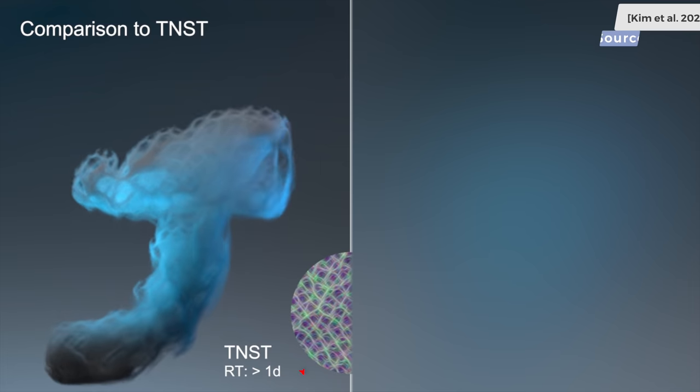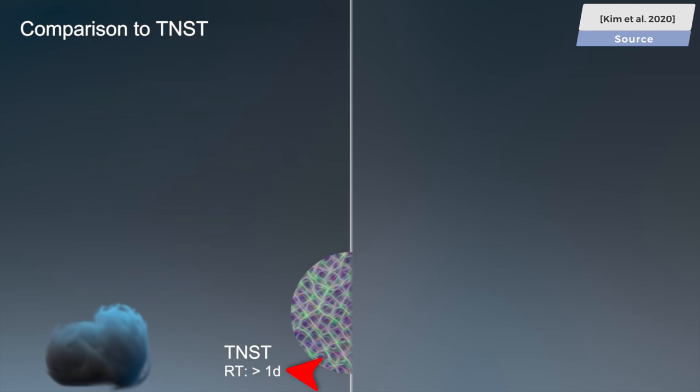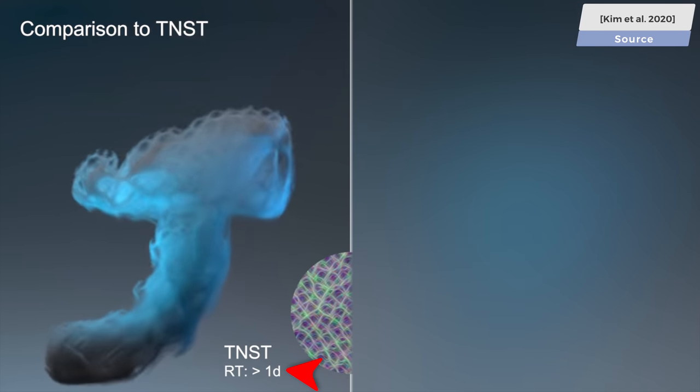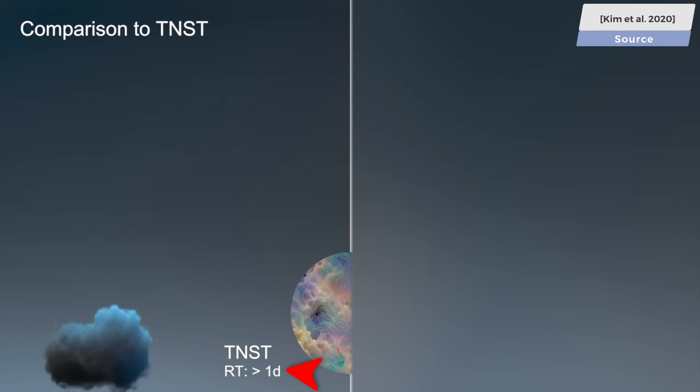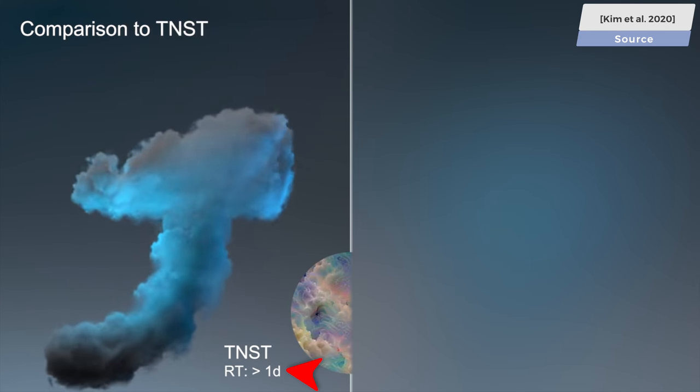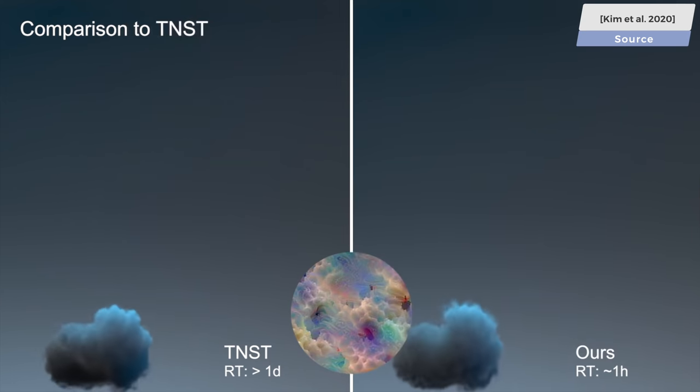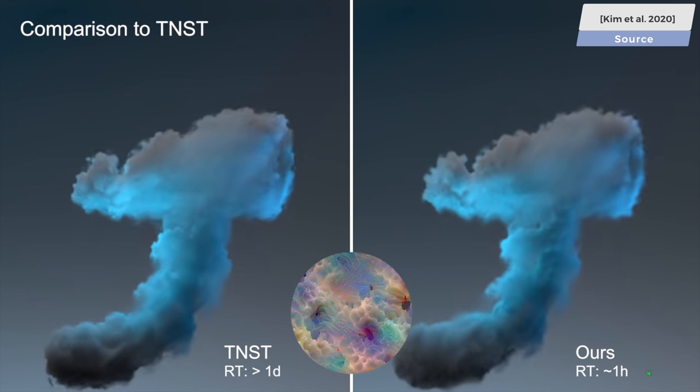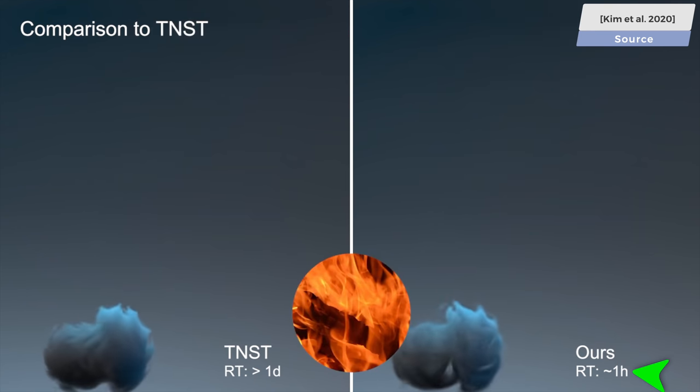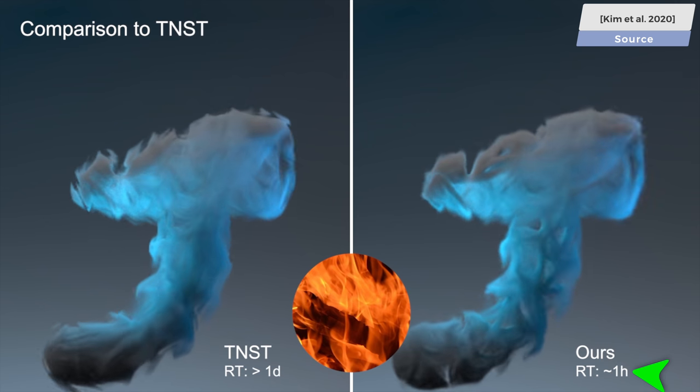For the previous technique, it said more than 1D. What could that 1D mean? Oh goodness, that thing took an entire day to compute. So what about the new one? What? Really, just one hour? That is insanity.